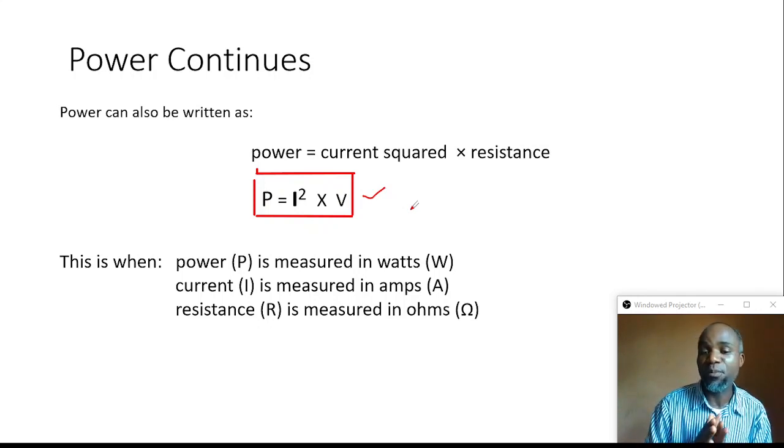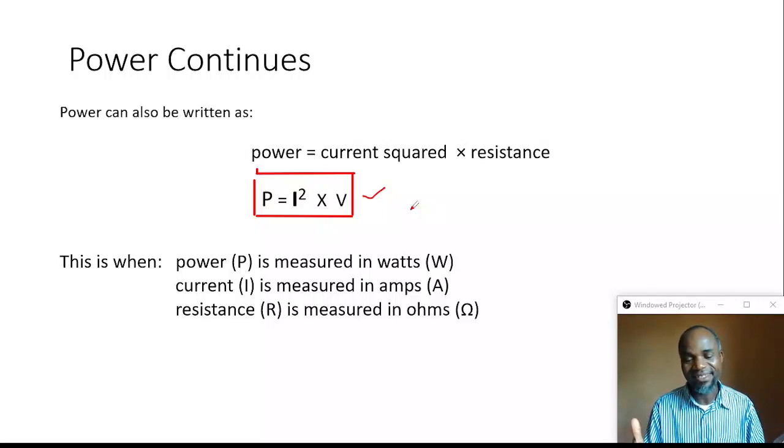Where power is measured in watts, current is measured in amperes, and resistance is measured in ohms. We are going to make use of these relations one at a time.